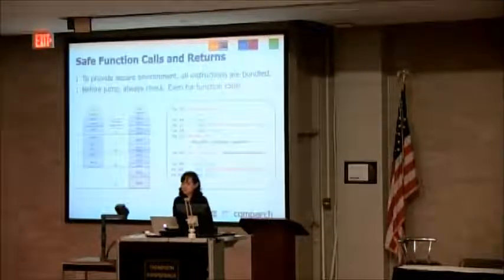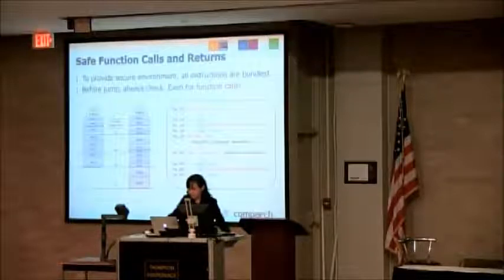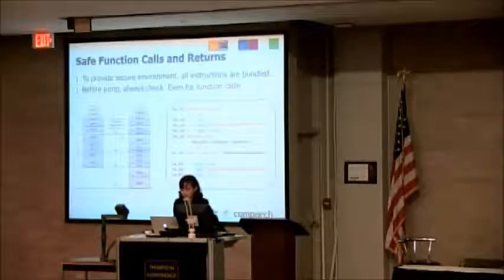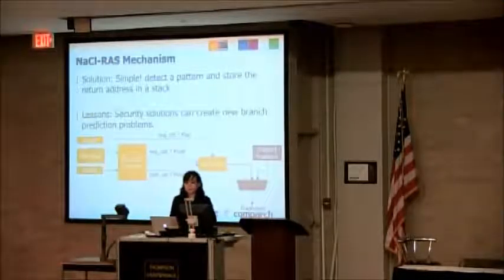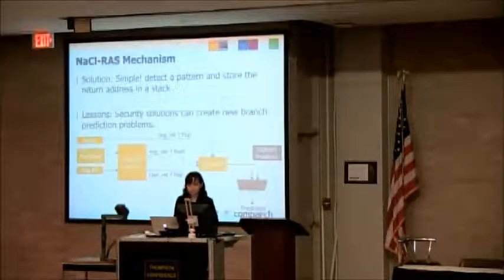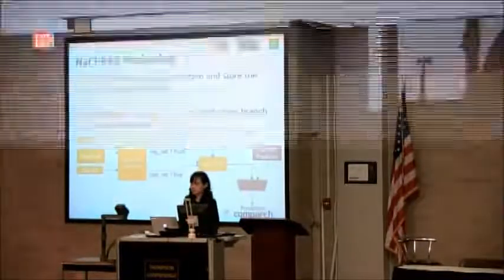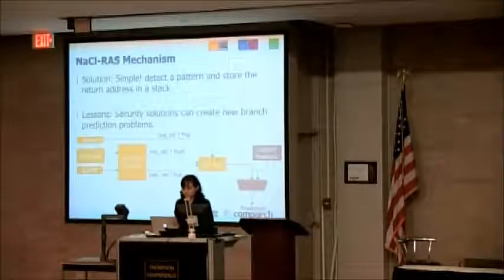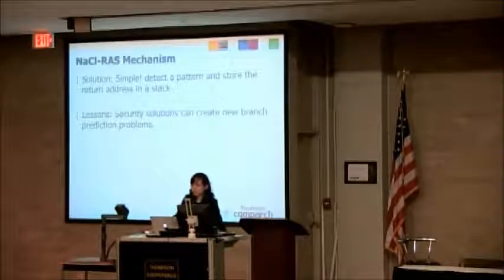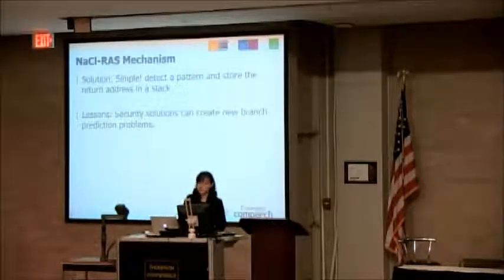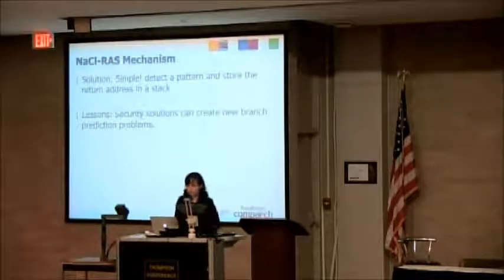Because of this bundling scheme, returns are replaced with jumps preceded by AND operations that check whether the instruction is the beginning of a new bundle. This means we can no longer really use a return address stack. The solution is fairly simple: we detect these patterns, and when we see NaCl return patterns or NaCl function calls, we use a specialized return address stack to predict the return address. The real lesson to take from this example is that security solutions can also create new branch prediction problems.